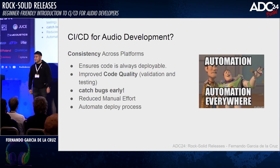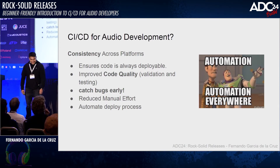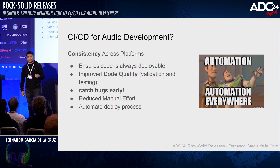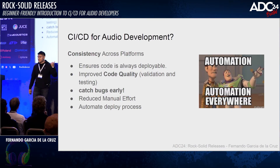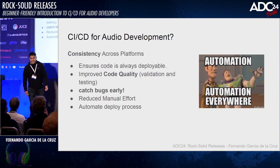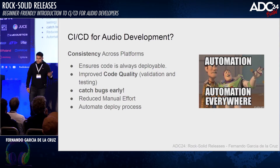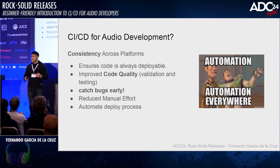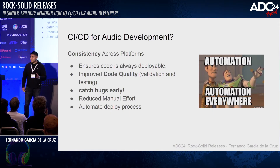Why do you care about CI/CD for audio plugin development? It gives you quite nice advantages. First of all, it gives you consistency across different platforms. For example, if you are running on Windows, you can make your plugin work on Mac using a GitHub Actions pipeline, which is super convenient if you're just working on one operating system. It ensures the code is always deployable, improves code quality, helps catch bugs because you can run unit tests on your plugin. It's about automation, basically.